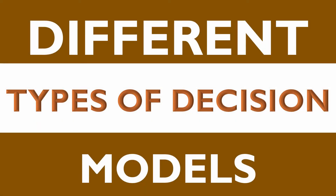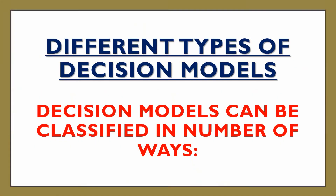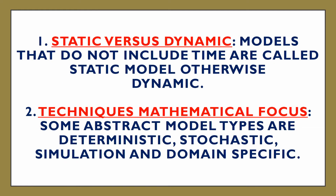Different types of decision models can be classified in a number of ways. The first classification is static versus dynamic. Models that do not include time are called static models, otherwise dynamic.